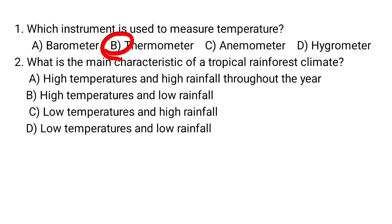Tropical rainforest climate is characterized by high temperatures and high rainfall throughout the year. In the tropics there is high insolation from the sun, which leads to high humidity. High humidity results in high evapotranspiration, which produces rainfall.